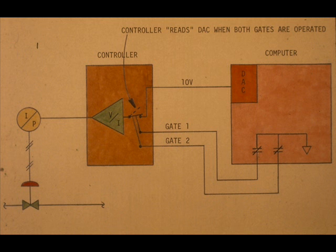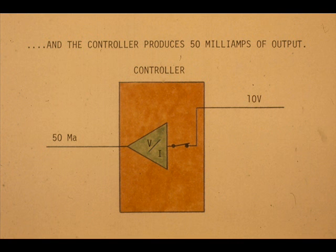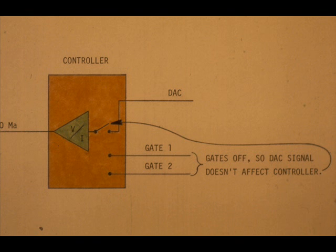The controller reads the DAC line, sees 10 volts, and the controller produces 50 milliamps of output.